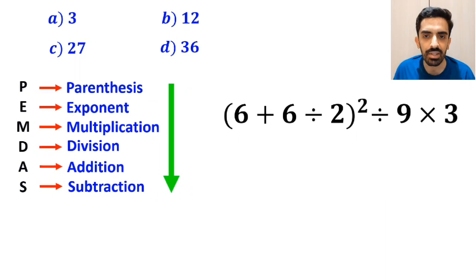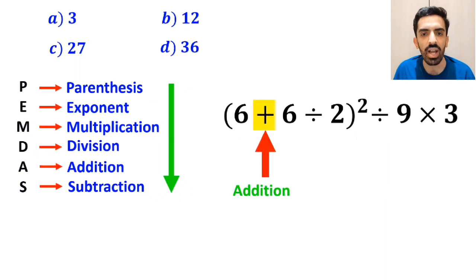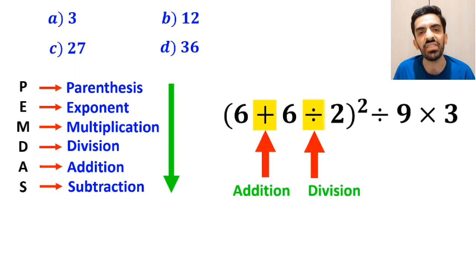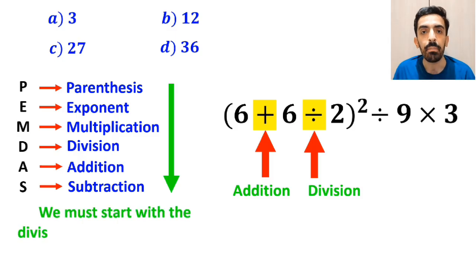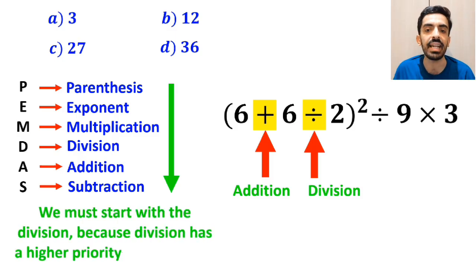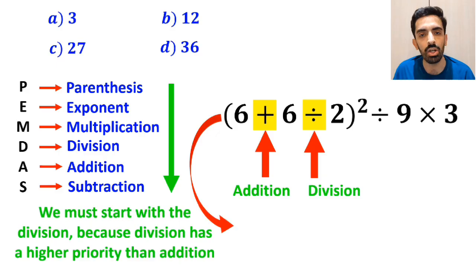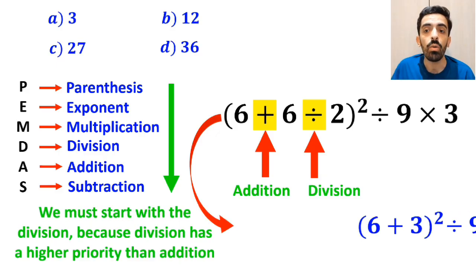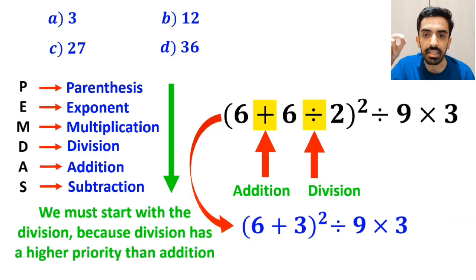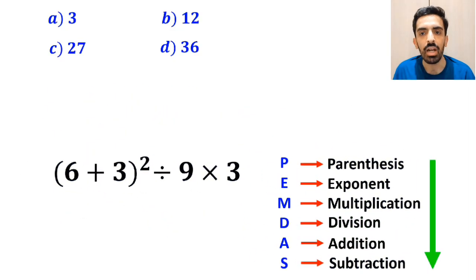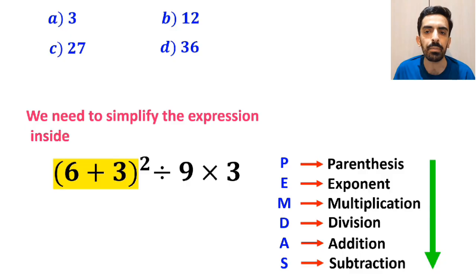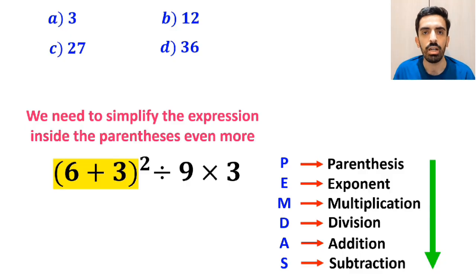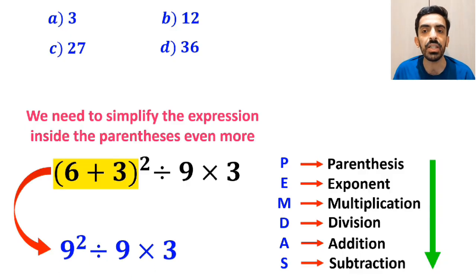As you can see, inside the parentheses we have an addition sign followed by a division sign. We must start with the division, because division has a higher priority than addition. So instead of that expression, we write (6 + 3)² ÷ 9 × 3. In the next step, we simplify the expression inside the parentheses even further, giving us 9² ÷ 9 × 3.